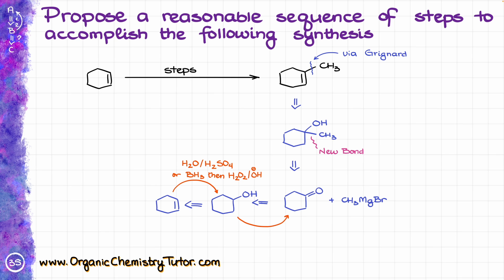Next, to go from the alcohol to a ketone, we are going to use an oxidation reaction. Since this is a secondary alcohol, it really doesn't matter which type of oxidation you use — anything from the Jones oxidation, which is chromium oxide and sulfuric acid, or chromic acid, or potassium dichromate, to anything like PCC, PDC, Swern, or Dess-Martin periodinane. Secondary alcohols will always oxidize to a ketone.